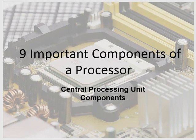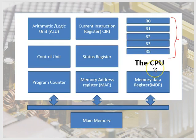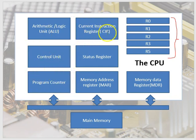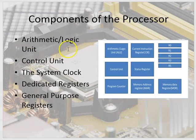Hello, it's Colin here from Grade A Computer Science, helping you to get that Grade A in computer science. Today we're going to be looking at nine important components of a processor. These components include the arithmetic logic unit, the control unit, the program counter, the current instruction register, the status register, the memory address register, the memory data register, general purpose registers, and the system clock.